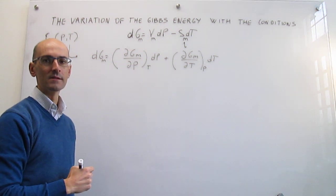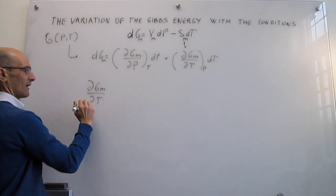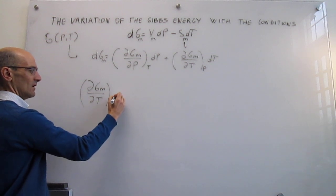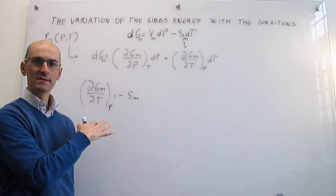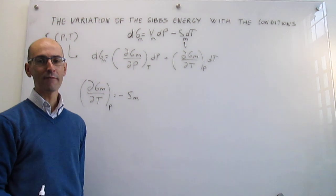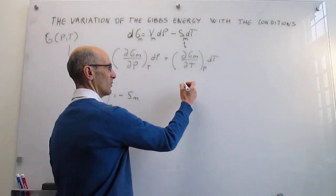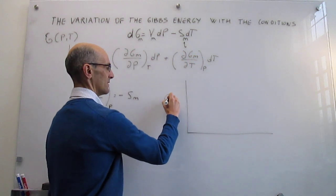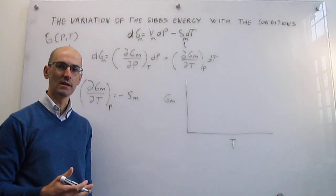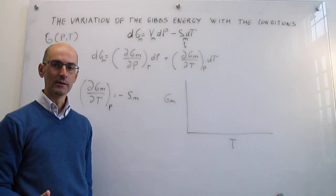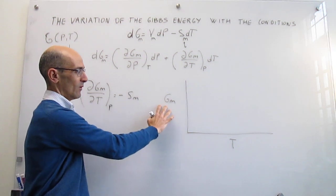Examining how the molar Gibbs energy depends on temperature at constant pressure, we find that (∂G_m/∂T)_P = −S_m, the negative molar entropy. This means the slope of a plot of molar Gibbs energy versus temperature equals the negative molar entropy. To understand this sensitivity, we draw a graph for a pure substance such as CO₂, plotting how the molar Gibbs energy changes with temperature for the three main phases: solid, liquid, and gas.